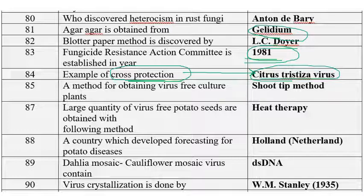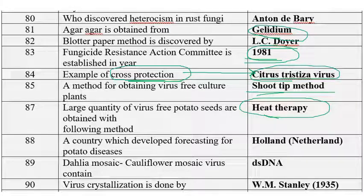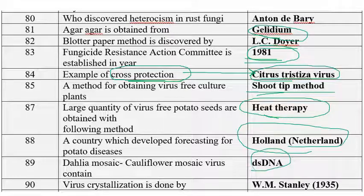A method for obtaining virus-free cultures in plants is the shoot tip method. A large quantity of virus-free potato seeds are obtained by heat therapy. The country that developed the forecasting system for potato disease is Netherlands or Holland. The genome of dahlia mosaic virus or cauliflower mosaic virus is double-stranded DNA.